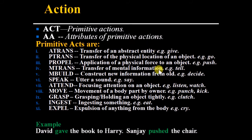Whenever you will get a sentence, you have to decide which type of action it is. For example, David gave the book to Harry. It means the owner of the book is David. Now Harry will be the owner. Transfer of an abstract entity. So that means a trans.